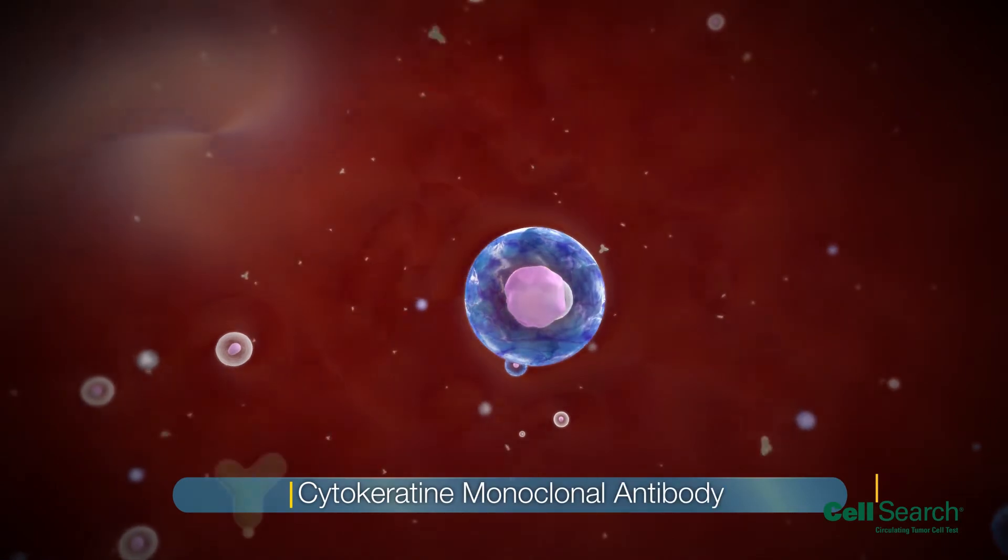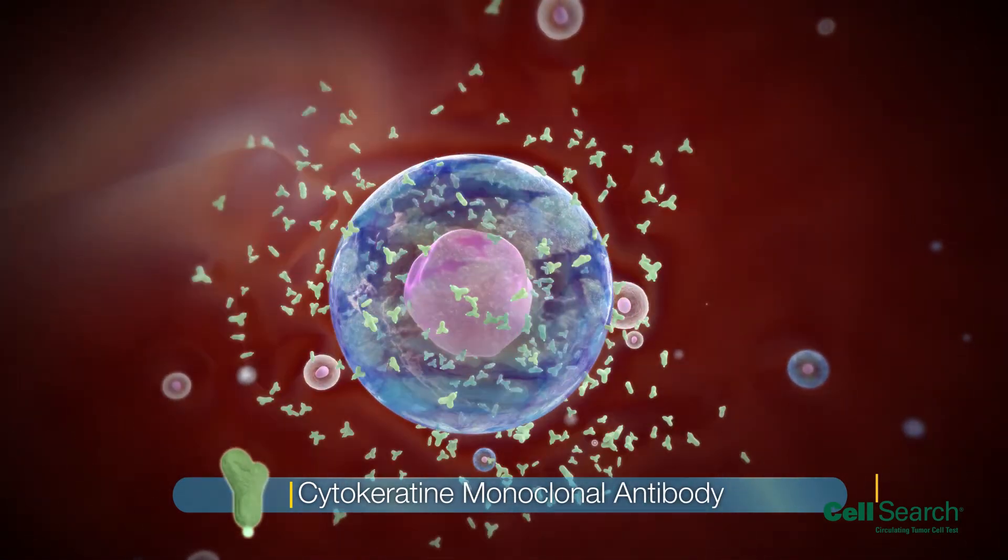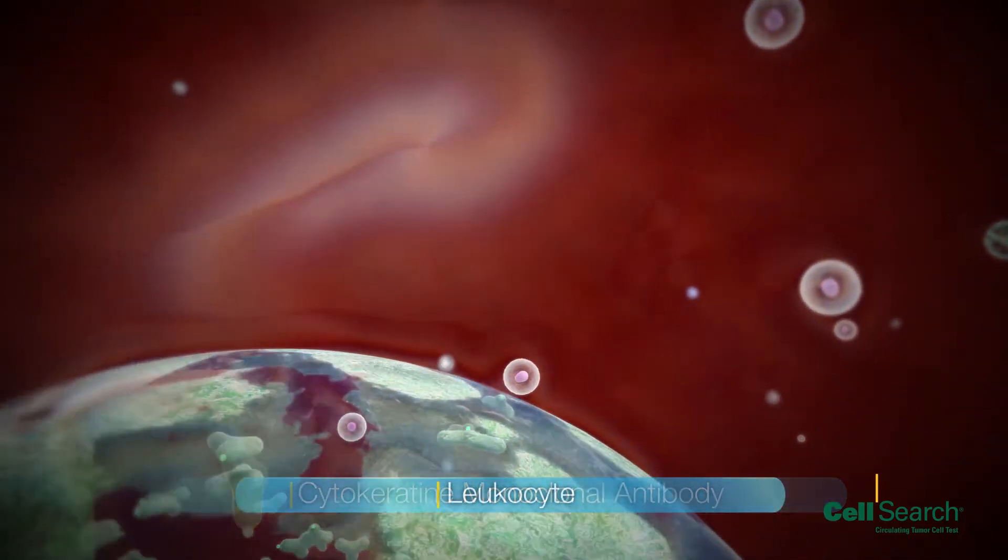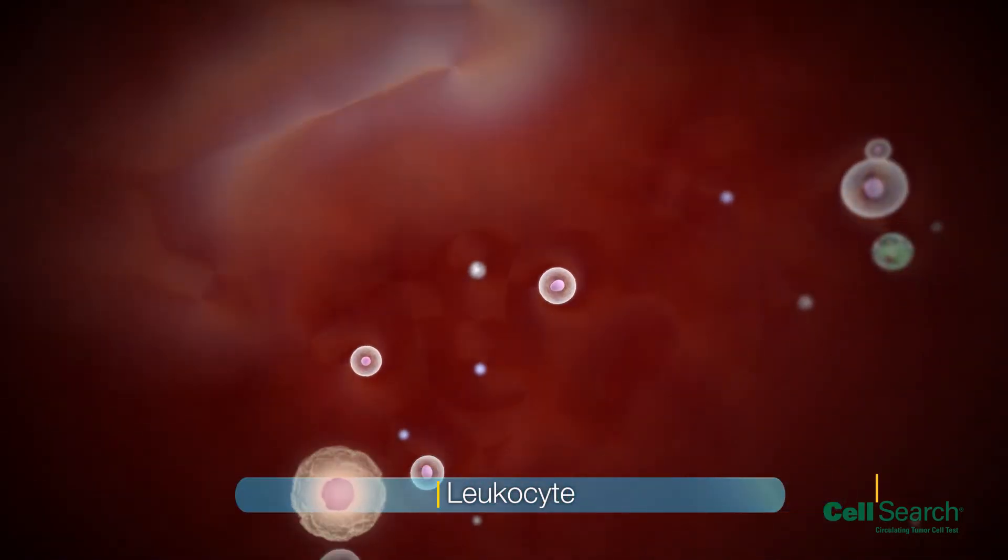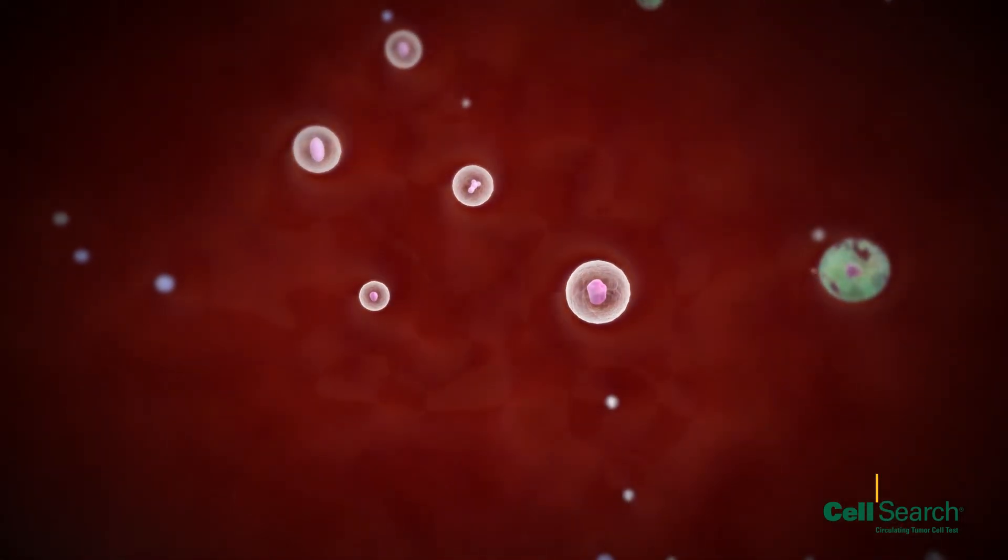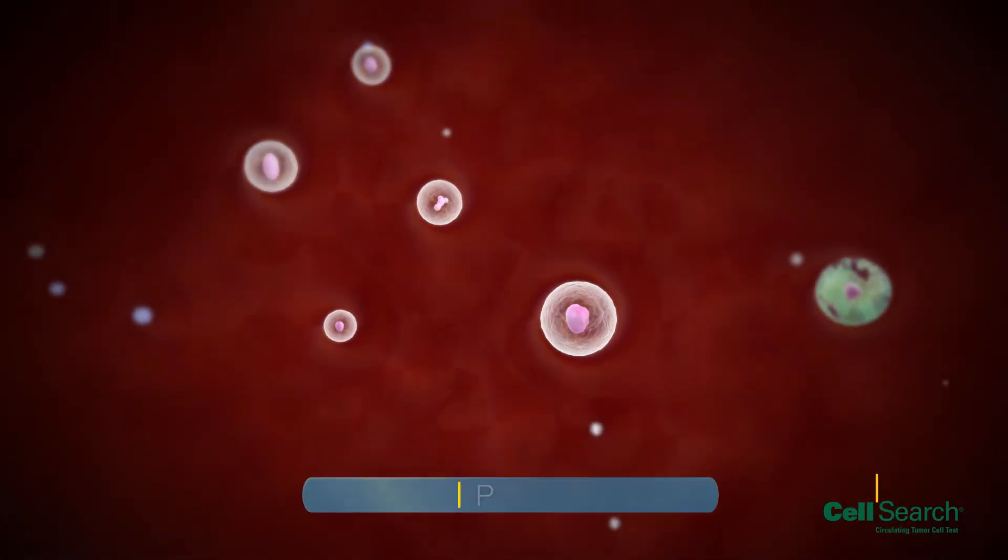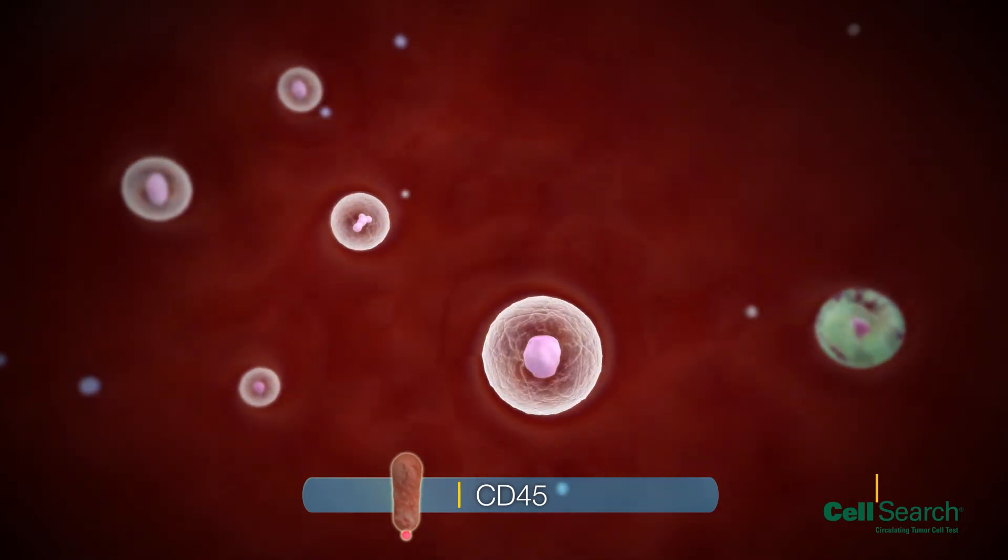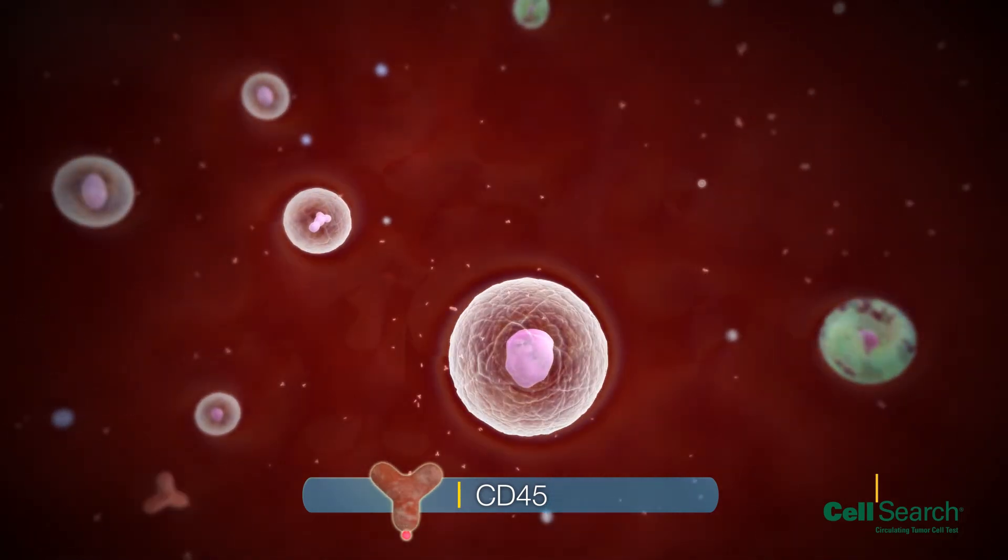CTCs are then stained with cytokeratin monoclonal antibodies, which are specific to epithelial cells. To distinguish contaminating leukocytes from CTCs, a pan-leukocyte monoclonal antibody called CD45 is also added. Finally, cell nuclei are stained using a DNA stain called DAPI.